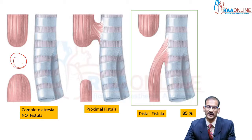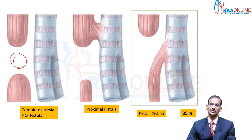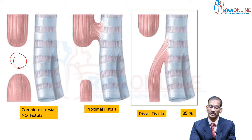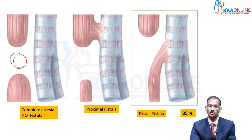The second type is a proximal fistula, where you have an esophageal atresia proximally. However, there is a communication between the proximal end of the esophagus and the trachea — this is the condition called the proximal fistula.